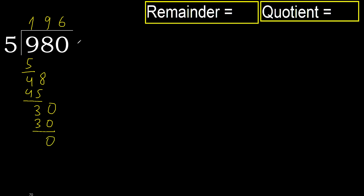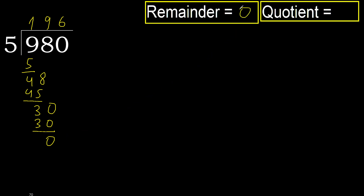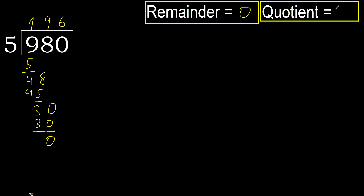Next. That is not a number, therefore finish it. 980 divided by 5 is 196.